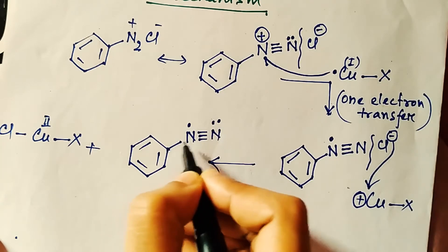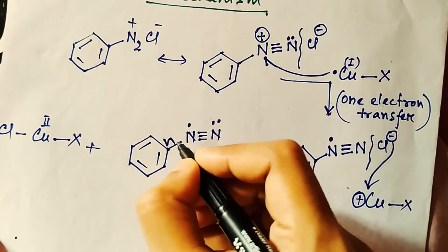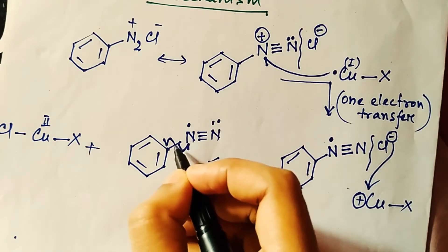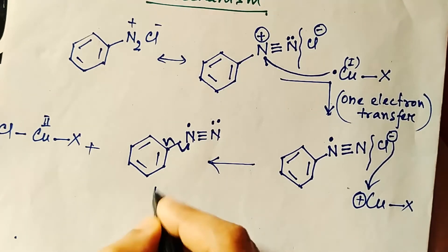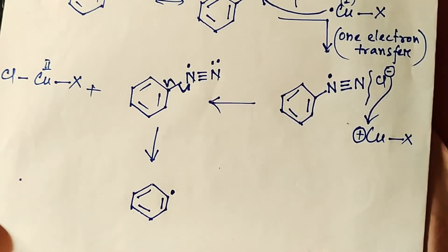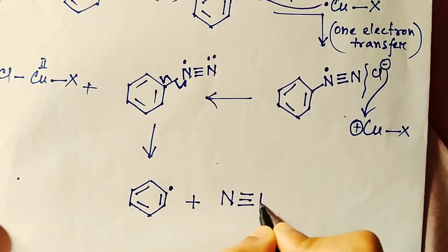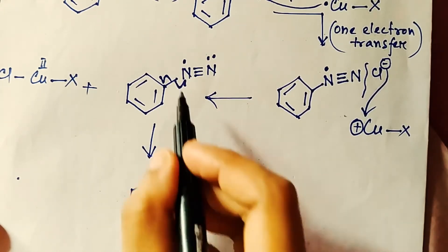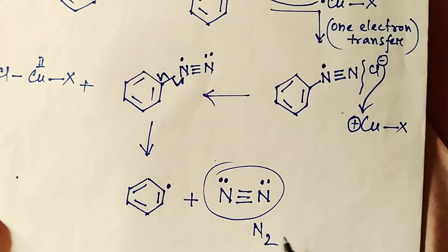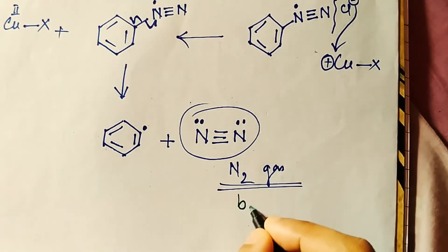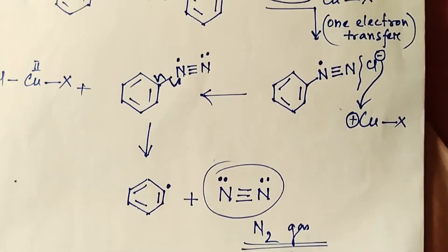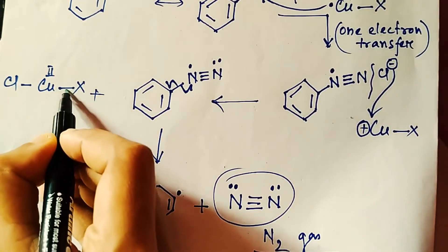Next, the sigma bond between benzene and nitrogen will break. You can see the half arrows indicating one-electron transfer — one electron transfers to nitrogen and another electron transfers to the benzene ring carbon atom. This gives a benzene radical and N2 gas with two electrons. N2 gas is the best leaving group in this reaction.